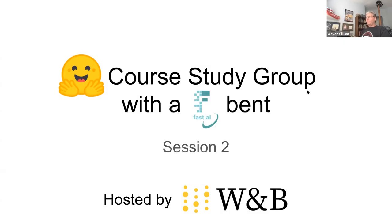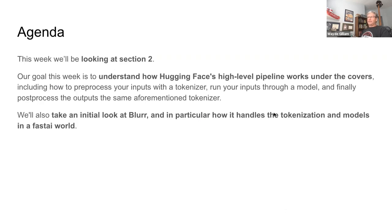All right, so we're going to get started. This is session two, and we're essentially looking at the second section in the Hugging Face official course. This week we'll be looking at — last week we looked at their high-level pipeline API, which is a really friendly two or three lines of code to be able to use some of the core NLP tasks with raw text. And so we're going to be looking at how to actually do these things ourselves: working with tokenizers, working with models, and then working with the outputs directly.